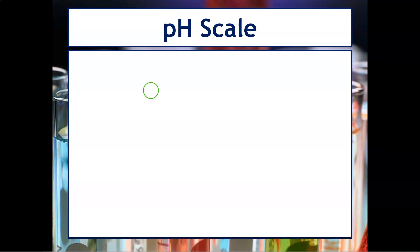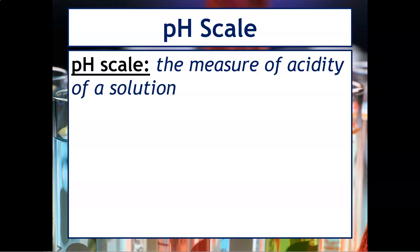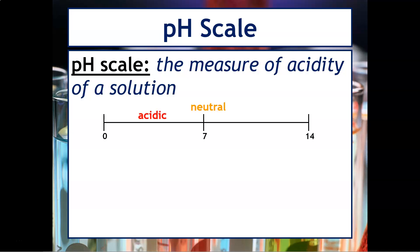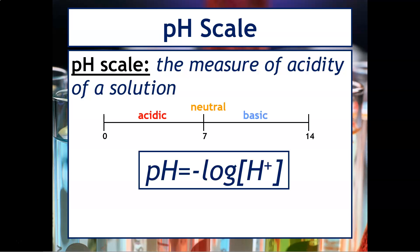Let's first discuss the pH scale. The pH scale is a measure of the acidity of a solution. It goes from 0 to 14, where from 0 to before 7 is considered acidic, 7 is neutral, and after 7 to 14 is basic. This is the formula you would need to calculate pH: pH equals negative log of the H plus concentration. The H plus represents the concentration of H plus in molarity. Solutions that have high concentrations of H plus are going to have a low pH, because that is the mathematical relationship we see here.